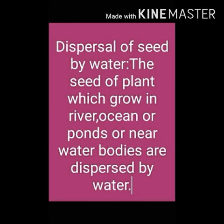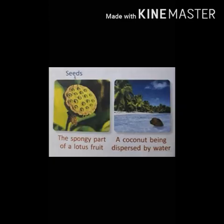Another way of seed dispersal is by water. Plants which grow in water or near water bodies use water for the dispersal of their seeds. The lotus fruit has a spongy structure and the coconut has a fibrous outer covering. These special features make them light and help the seeds float on water and move long distances.